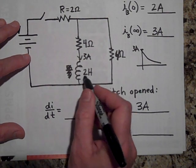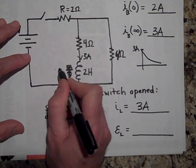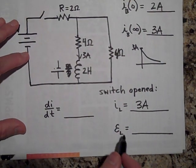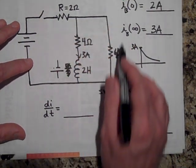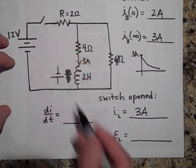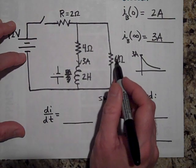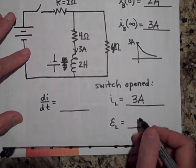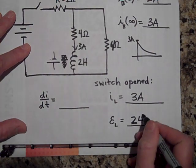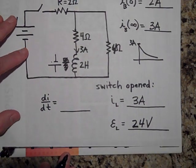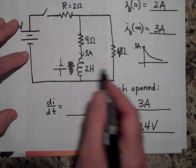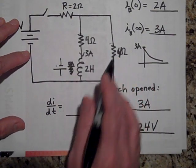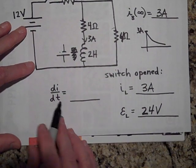With the switch open, the inductor acts like a battery pushing the current around through the two 4-ohm resistors. Using Kirchhoff's loop rule: three amps through four ohms gives 12 volts, and another three amps through four ohms gives another 12 volts — so the EMF of the inductor will be 24 volts at t equals zero.